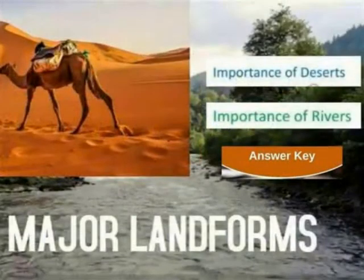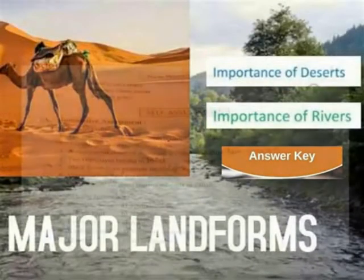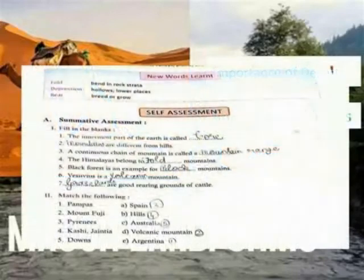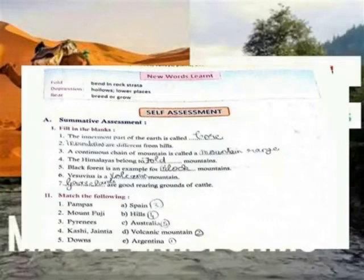The Standard Social Lesson 3: Major Landforms. The anonymous part of the earth is called a plateau. Mountains are different from hills. The continual sign of a mountain is called the Mountain Range. The Himalayas belong to fold mountains. Black Forest is an example of block mountains. Resilience is here — Valkyrie Mountain.